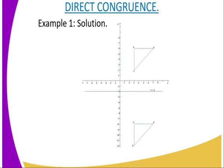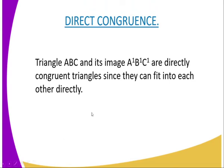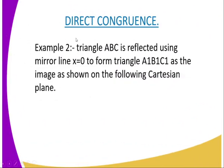After reflection, you can see that the triangle will have the same shape after the transformation. It has the same shape and therefore it can perfectly fit onto its image. In this case we can say that triangle ABC and image A prime B prime C prime are directly congruent, since they can fit on each other directly without requiring any rotation.